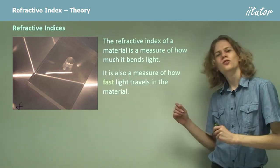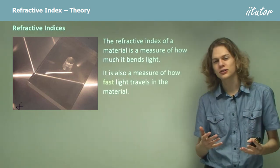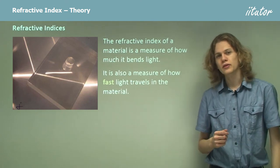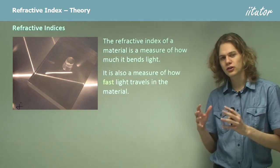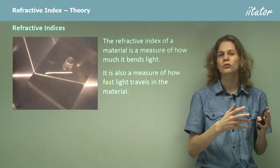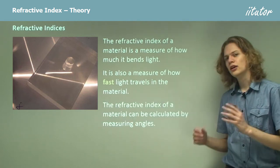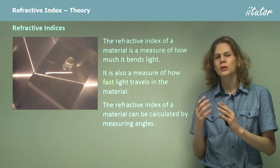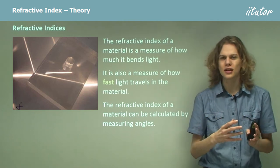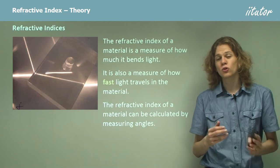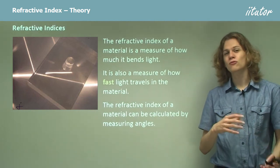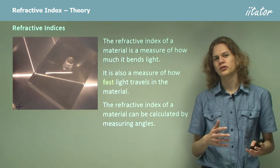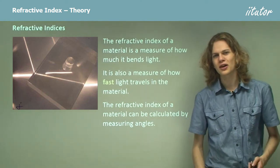It turns out that refractive index is also a measure of how fast light is traveling inside the material. If something has a very large refractive index, it means that it slows light down. The refractive index of a material can be calculated by looking at how the angle of a beam of light changes as it enters the material, or by figuring out how fast light travels through that material.